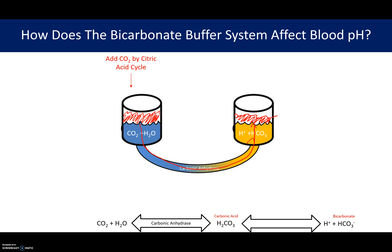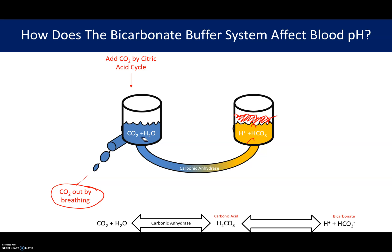The CO2 we produce during exercise can cause, through the bicarbonate buffer system, an increase in acidity or a decrease in pH. Now one of the things that you have in your body is an ability to get rid of CO2. As we start to exercise we produce a lot of CO2 but we also breathe a lot more. As we exhale CO2 we're deflating or lowering this side, so we'll have less CO2 on this side.